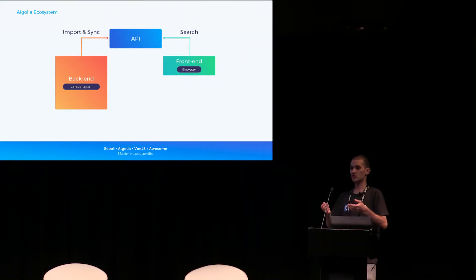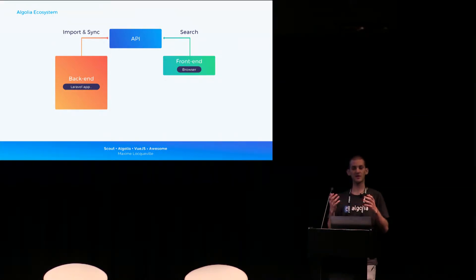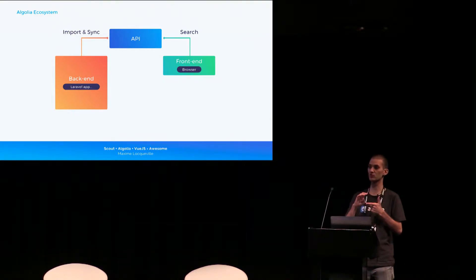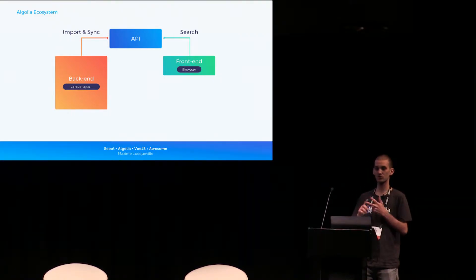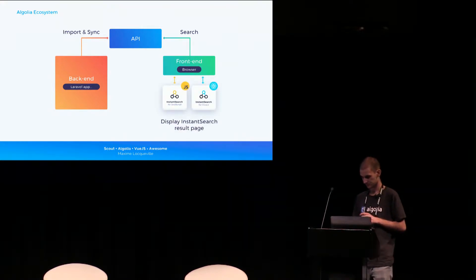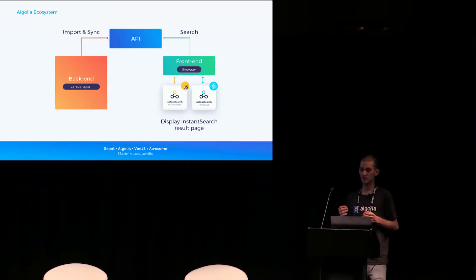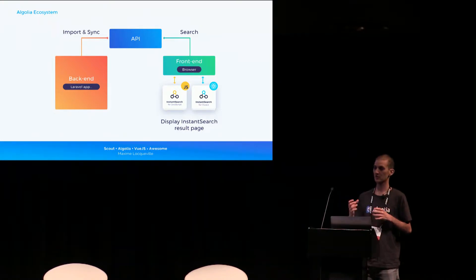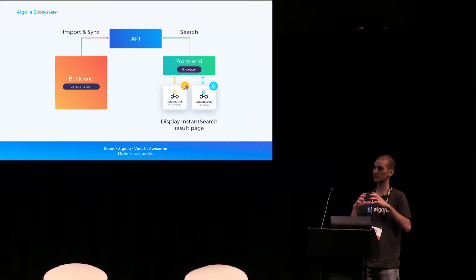When you query Algolia from the frontend, you get raw data from the engine, but it can be quite hard to display properly. You need to handle the search state — the current filters, current search query, pagination — and that can take quite a while. That's why we built a few libraries called Instant Search that allow you to build these frontend experiences very quickly.